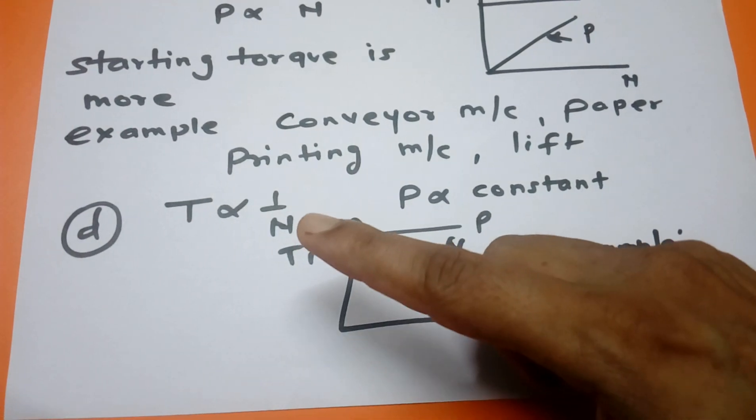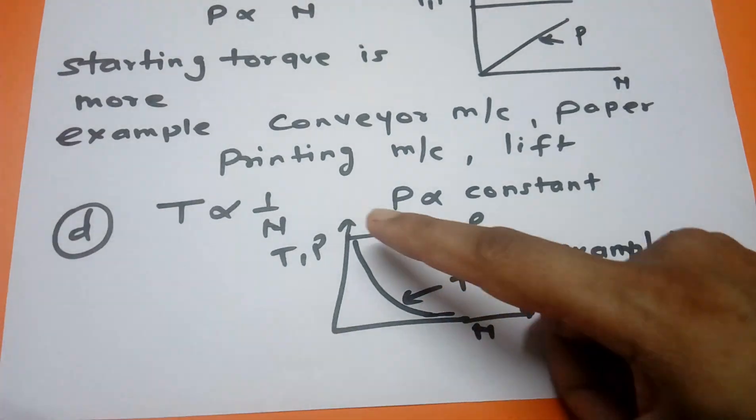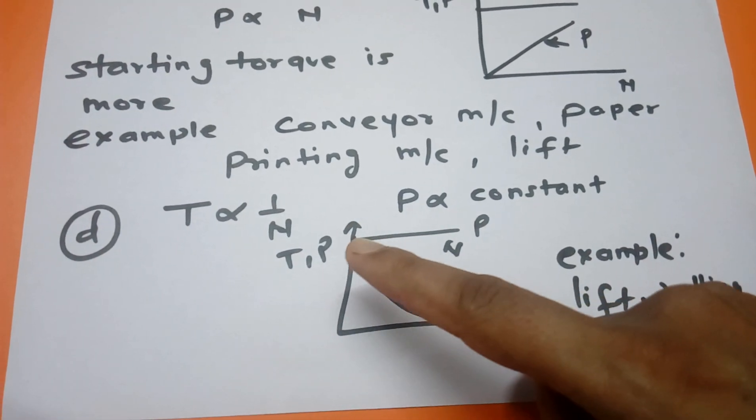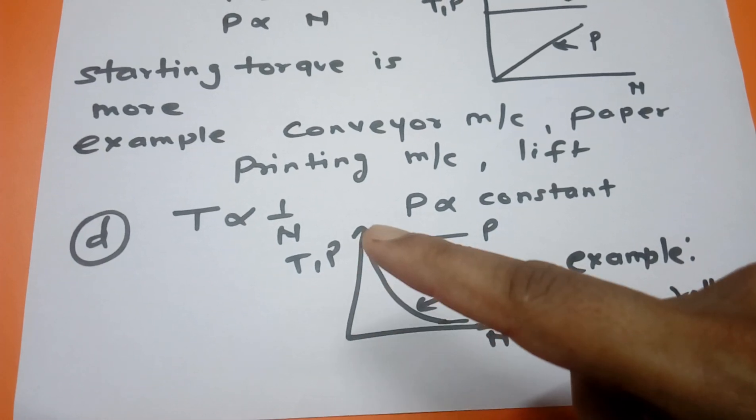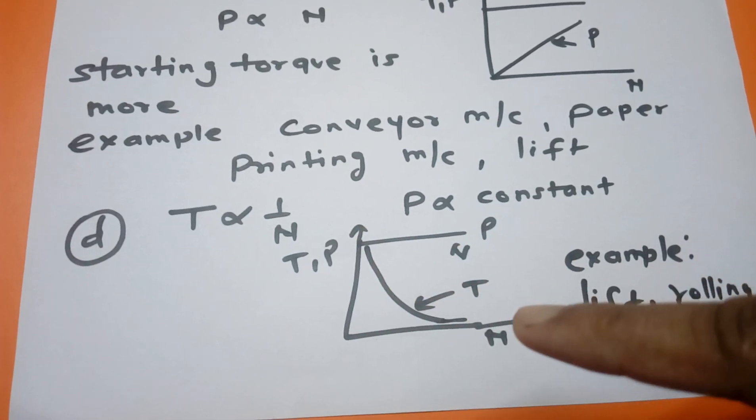Next type of characteristic we are using is inverse characteristic. We can say that as speed increases, torque decreases. Here we can see the inverse characteristic and here power is always constant.